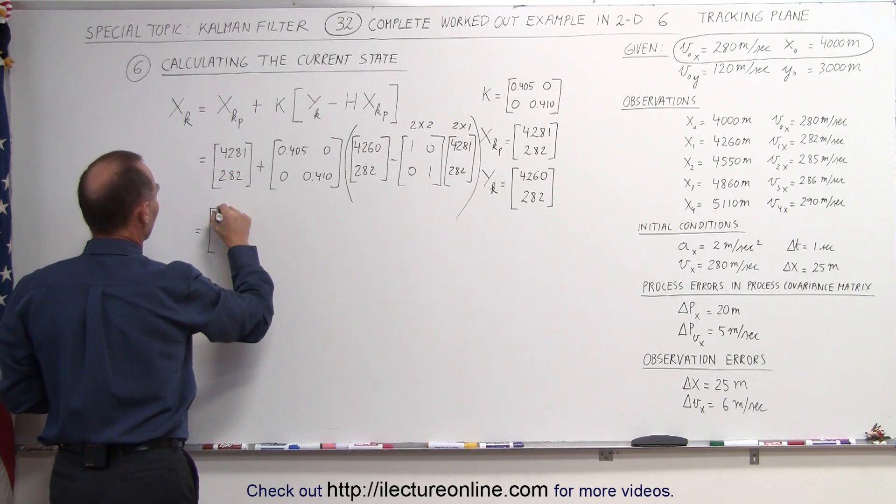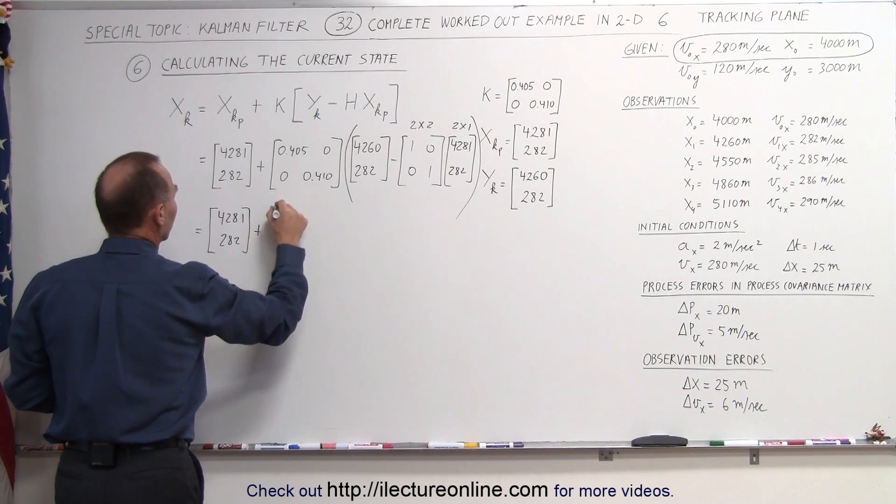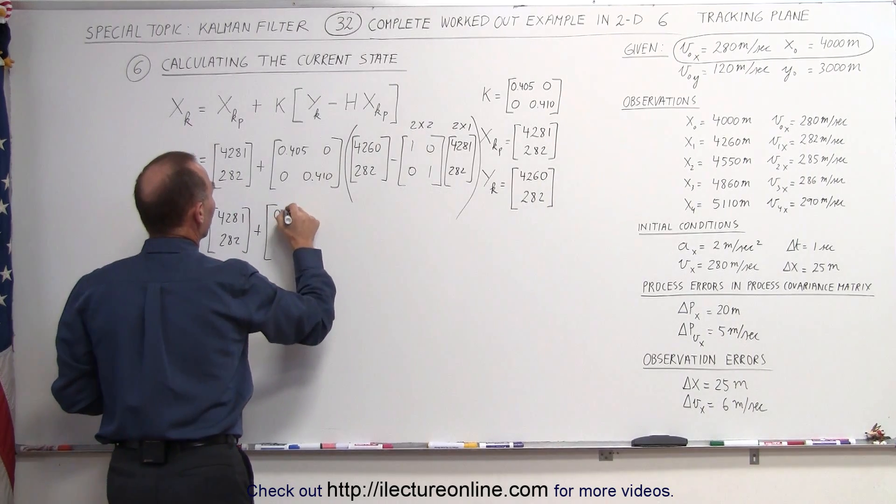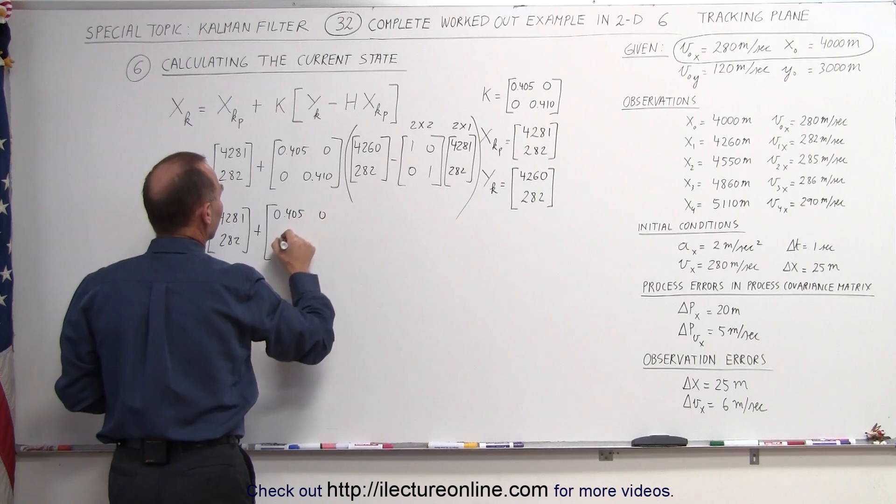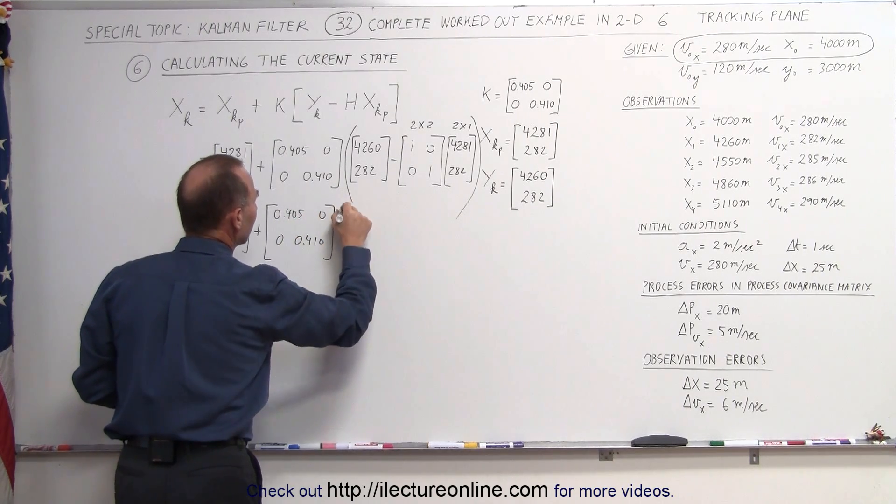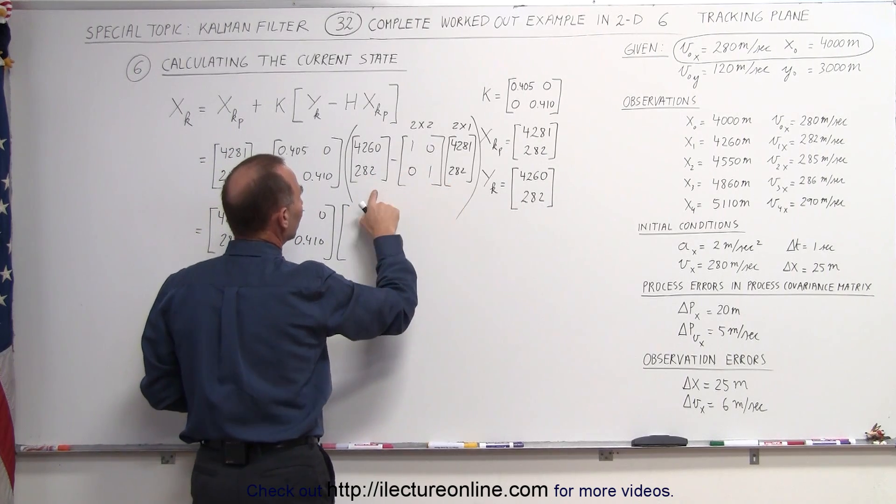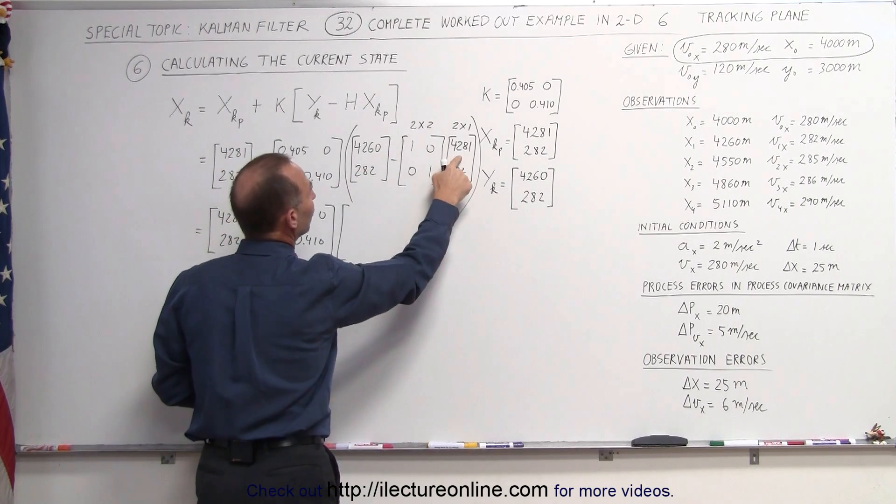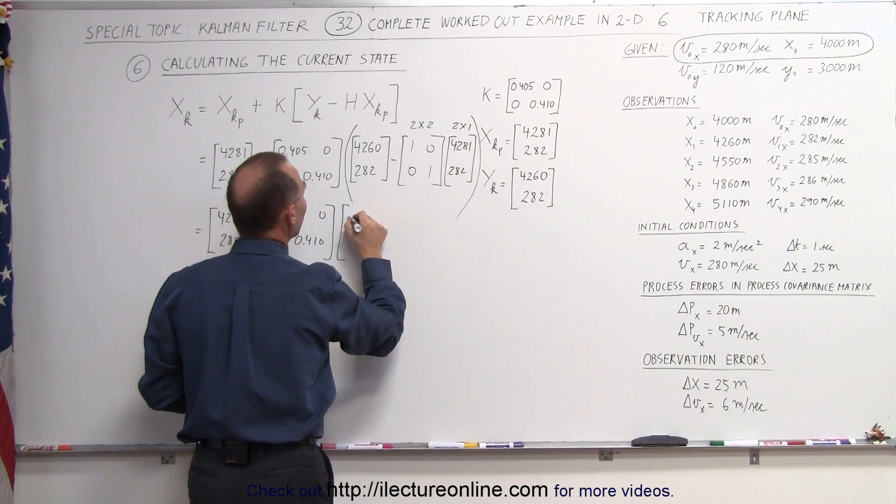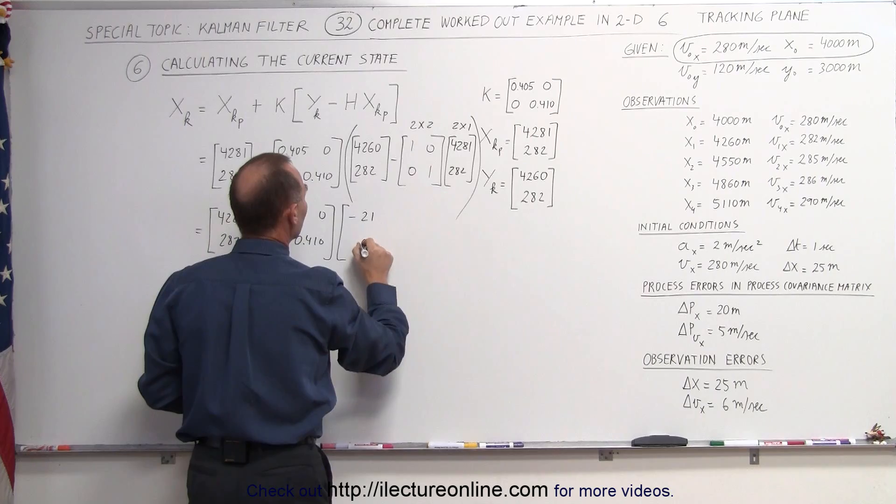Sometimes you do need a specific form of the matrix there to make the transformation from this matrix onto what you need it to be. This now becomes 4,281, 282, plus 0.405, 0.410, and now we simply need to subtract this matrix from this matrix. So 4,260 minus 4,281, that becomes minus 21, and 282 minus 282, which is 0.